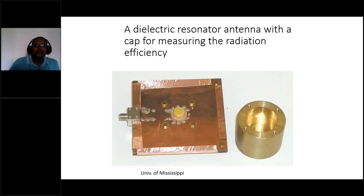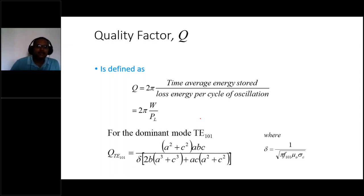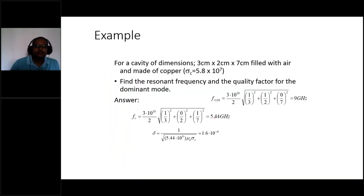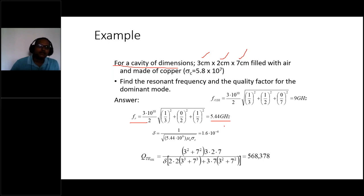Quality factor Q for a cavity resonator is defined as Q = 2π × (time average energy stored)/(loss energy per cycle of oscillations), given by Q = 2πW/Pl. For a cavity of dimensions 3 × 2 × 7 cm with air filling and copper material, the resonating frequency fr = (3×10¹⁰/2)·√((1/a)² + (1/b)² + (1/c)²) = 5.44 GHz.